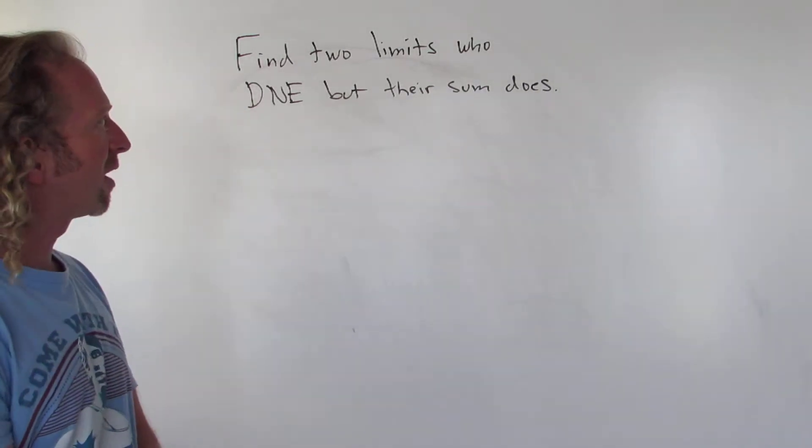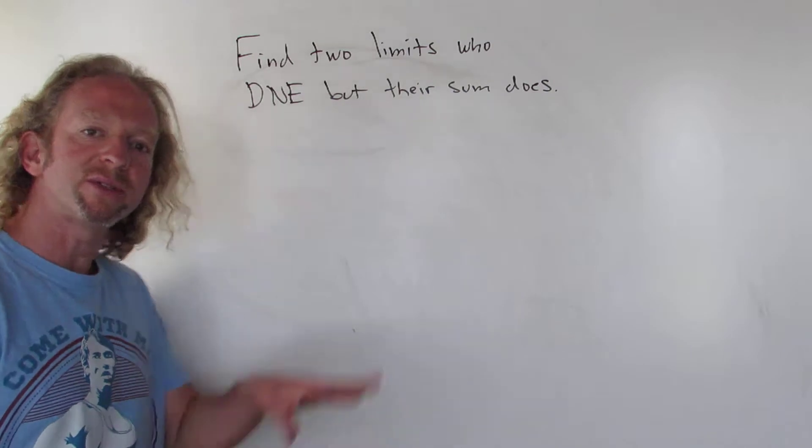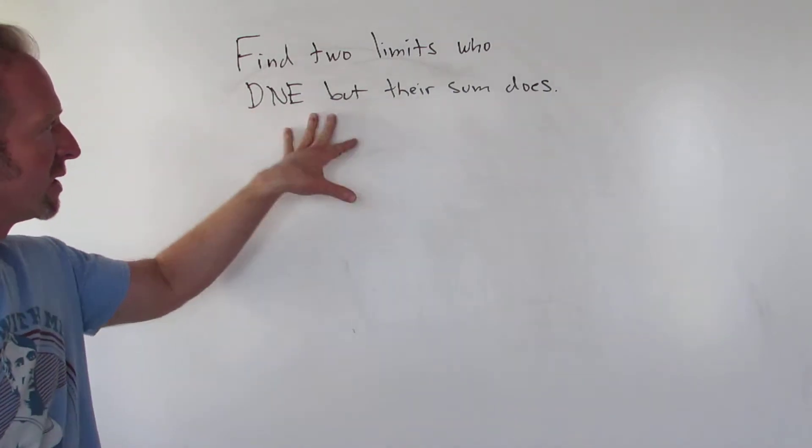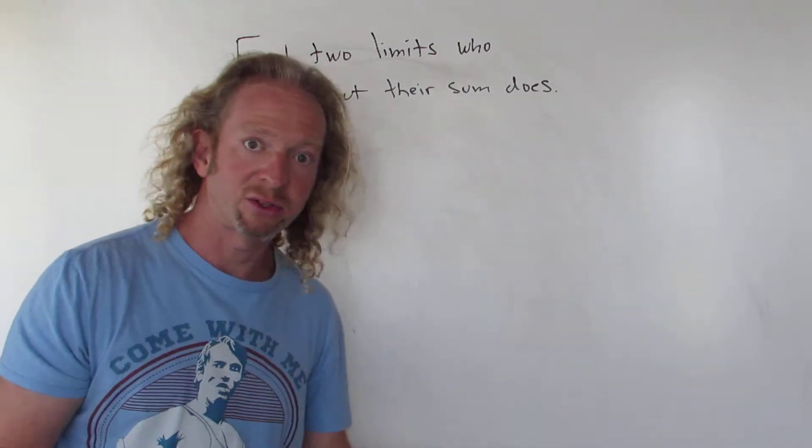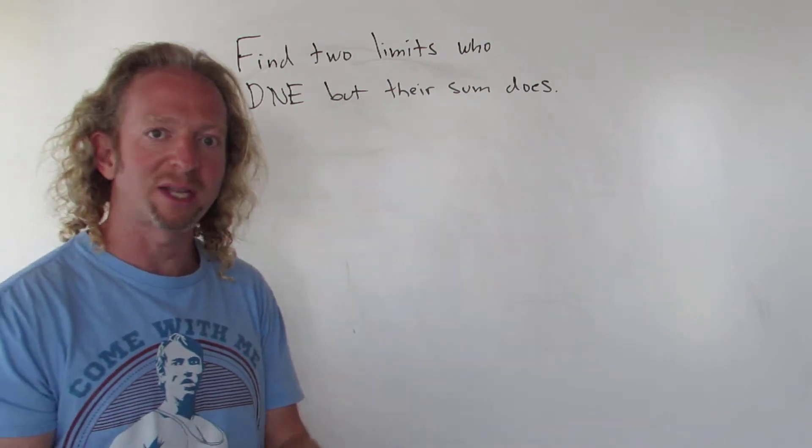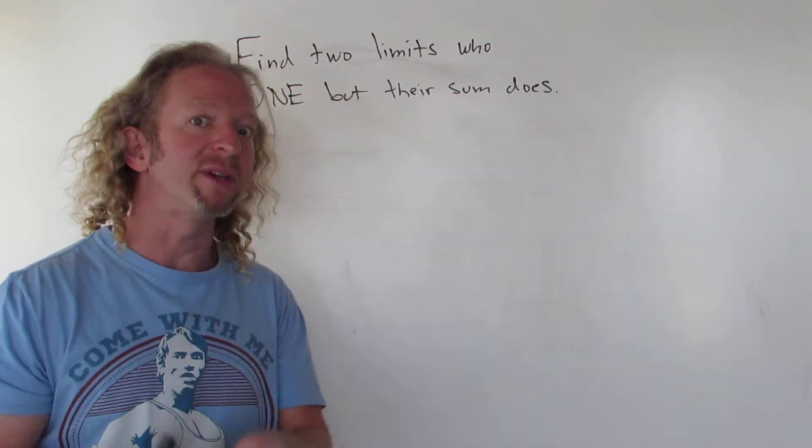Hey everyone, this is kind of a fun problem. The question is to find two limits who do not exist, but their sum does. So we want two limits that do not exist, but the sum of the limits does exist.